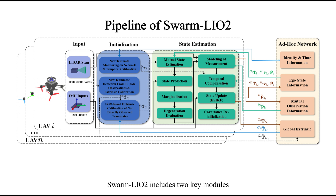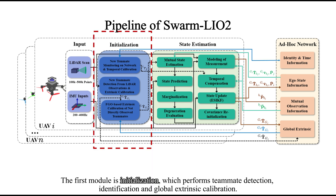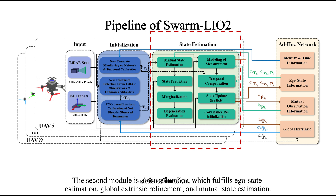Swarm LiO2 includes two key modules. The first module is Initialization, which performs teammate detection, identification, and global extrinsic calibration. The second module is State Estimation, which fulfills ego state estimation, global extrinsic refinement, and mutual state estimation.